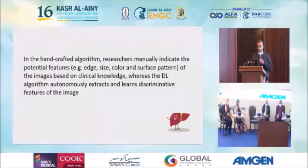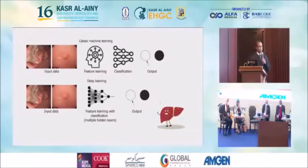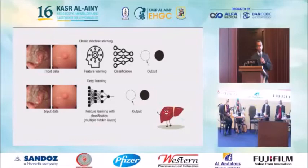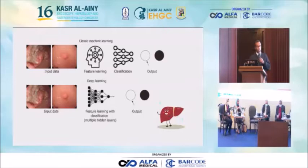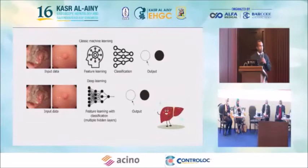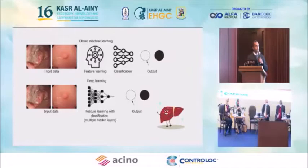This is a classic example of classic machine learning versus deep learning. In classic machine learning, variables are manually inserted and a computer software system gives us the final conclusion whether a lesion is malignant or benign. Whereas in deep learning, these variables undergo many hundreds of analyses through the neural network algorithms to predict the possibility of cancer in these lesions.